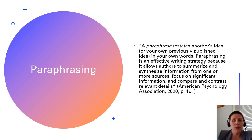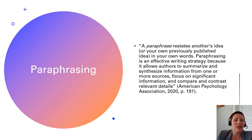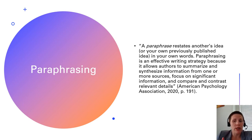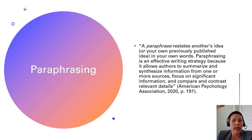Paraphrasing: a paraphrase restates another's idea, or your own previously published idea, in your own words. Paraphrasing is an effective writing strategy because it allows authors to summarize and synthesize information from one or more sources, focus on significant information, and compare and contrast relevant details. You should try to paraphrase more than you use direct quotes. You must always provide credit for where you paraphrase, including the author's last name, the year of publication, and the page number of where that paraphrase came from.